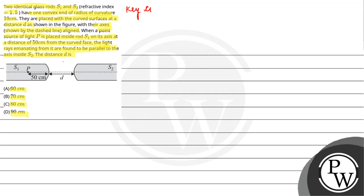So here our key concept is refraction at curved surface. The formula is mu2 upon V minus mu1 upon U equals mu2 minus mu1 upon R. Here the light goes from mu1 to mu2 medium.